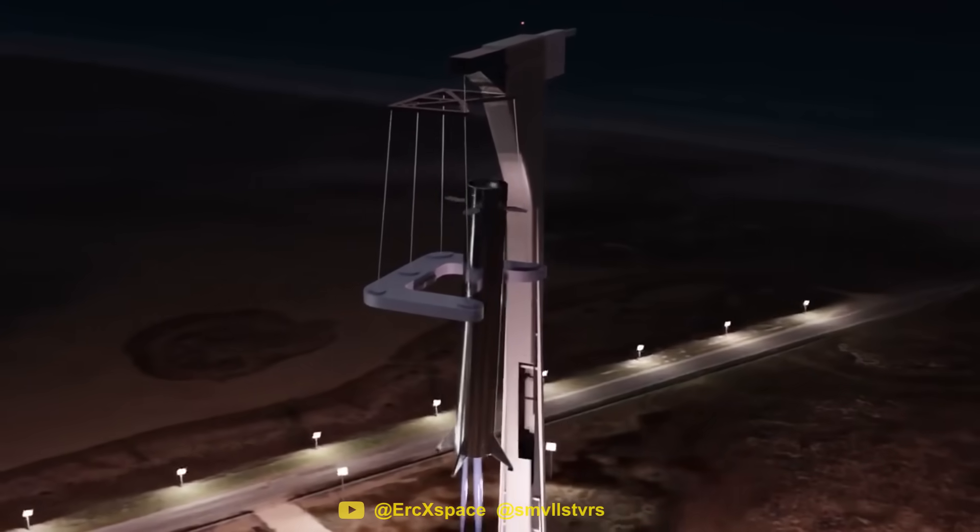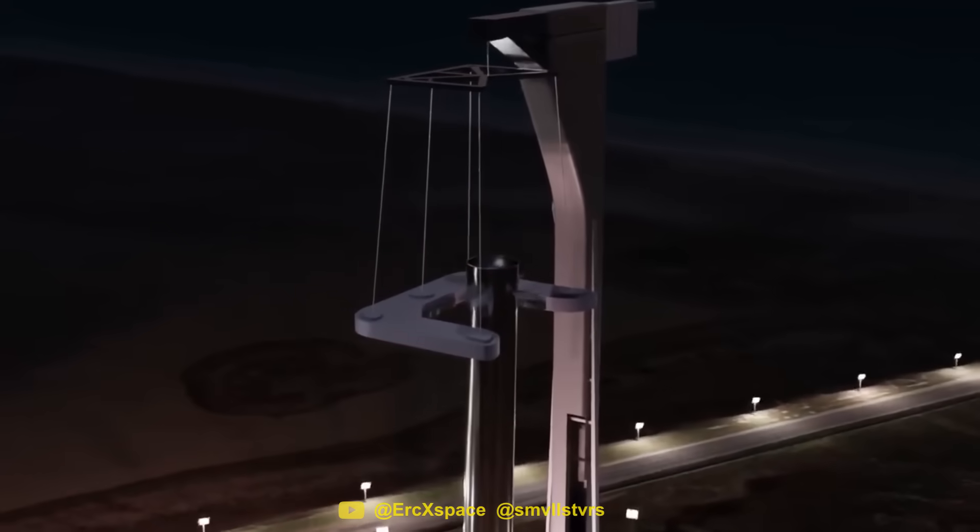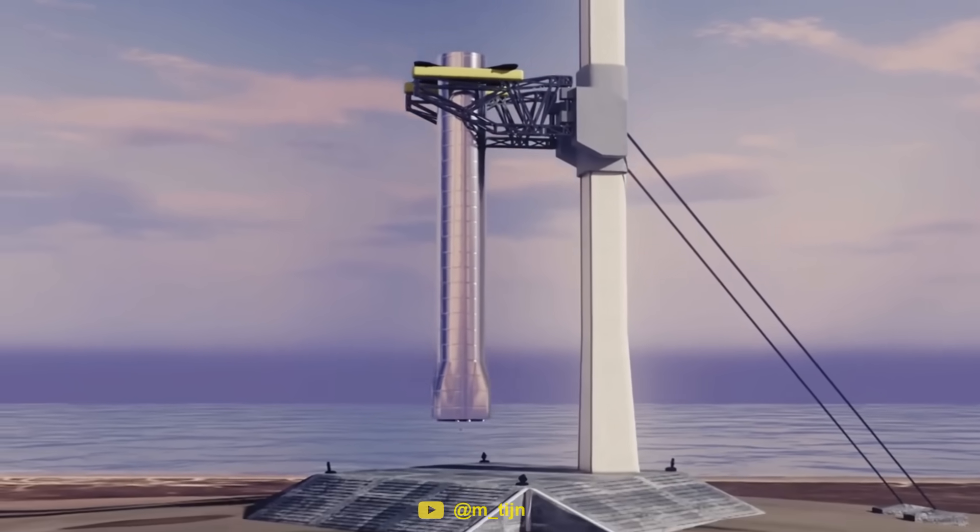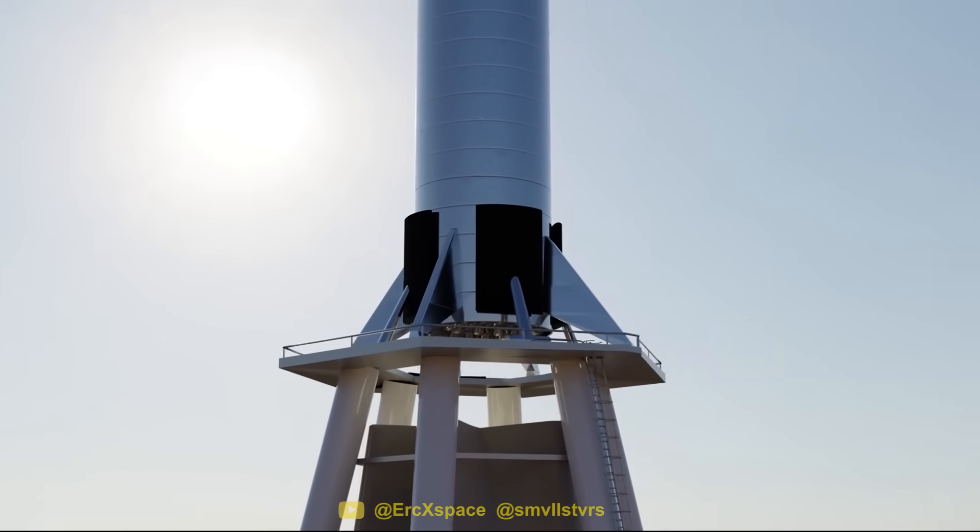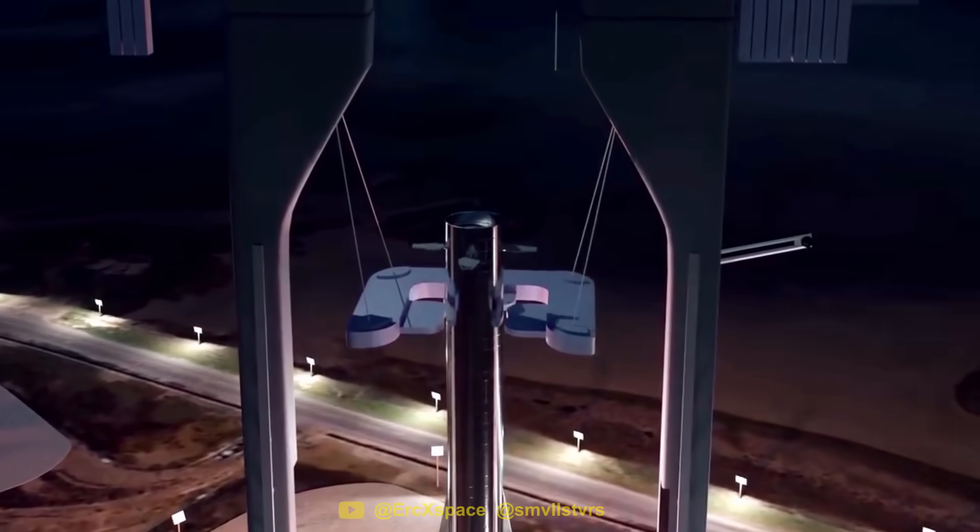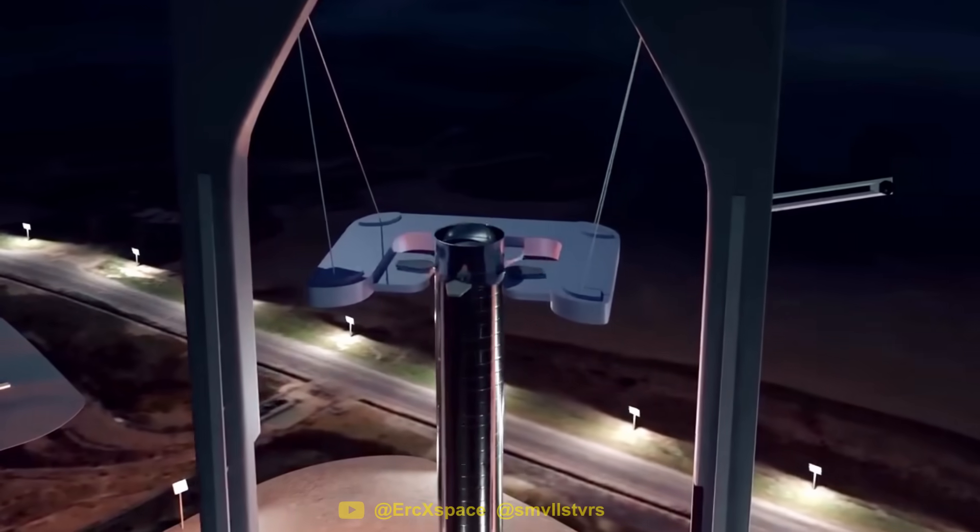The main thing here is that the shock absorption will be built into the catcher and not the rocket. This will reduce the amount of stress on the rocket, taking away any need for major refurbishment. SpaceX will likely use a similar system of air suspension but on a much larger scale.